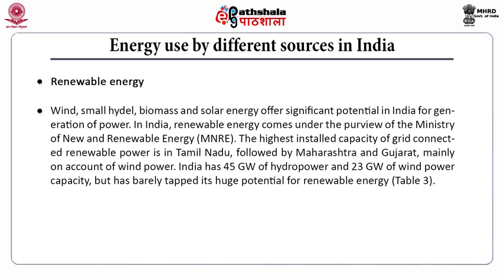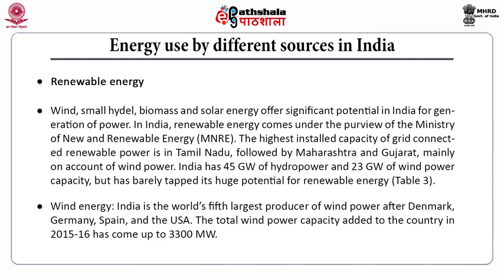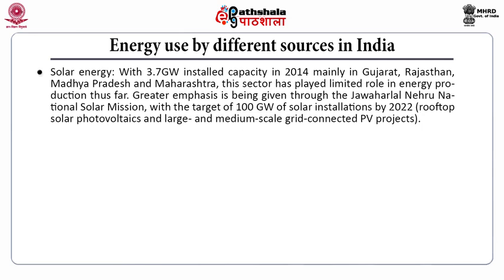India has 45 gigawatt of hydropower and 23 gigawatt of wind power capacity but has barely tapped its huge potential for renewable energy. India is the world's fifth largest producer of wind power after Denmark, Germany, Spain and the USA. The total wind power capacity added to the country in 2015-16 came up to 3,300 megawatt. Solar energy with 3.7 gigawatt installed capacity as of 2014, mainly in Gujarat, Rajasthan, Madhya Pradesh and Maharashtra, has played an important role in energy production. Greater emphasis is being given through the Jawaharlal Nehru National Solar Mission, with a target of 100 gigawatt of solar installation by 2022, mainly through rooftop solar photovoltaics and large and medium scale grid-connected photovoltaic projects.